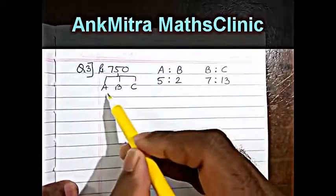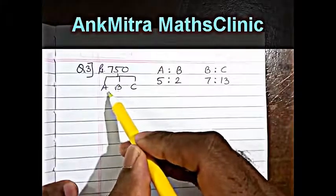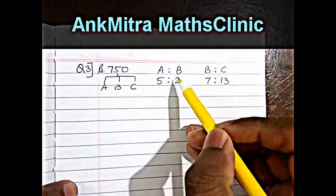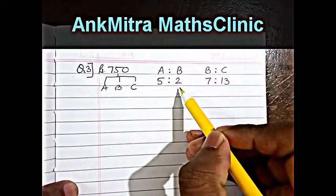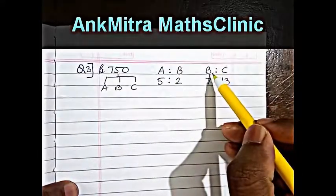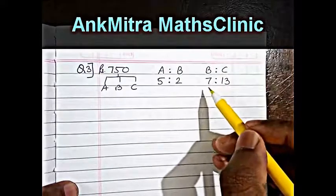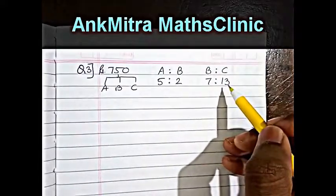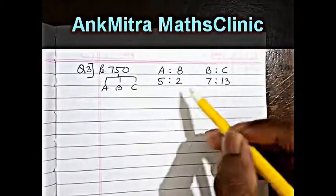Here rupees 750 is to be distributed amongst three people A, B and C. The amount received by A and B is in the ratio of 5 is to 2, whereas the amount received by B and C is in the ratio of 7 is to 13, and we are asked to find what will be A's share in this.